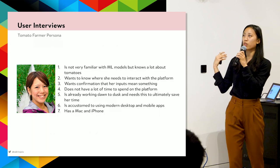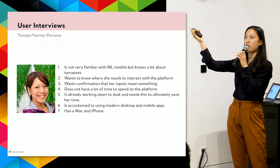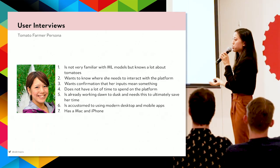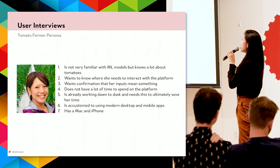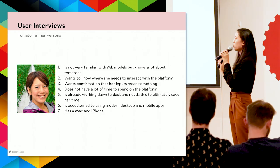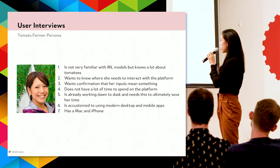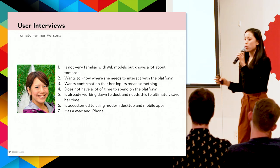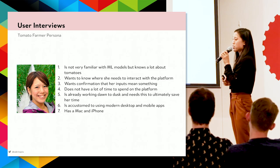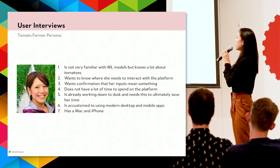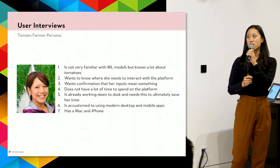From our fake user interviews, we've uncovered seven key points: she's not familiar with machine learning but knows a lot about tomatoes; she wants to know where she needs to interact with the platform; she wants confirmation that her inputs mean something; she doesn't have a lot of time — she's already working dawn to dusk; this needs to save her time, not take more of it; she's accustomed to modern desktop and mobile apps; and she has a Mac and an iPhone.